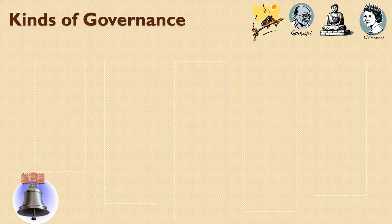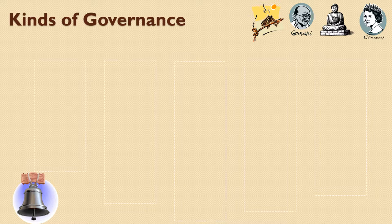To get started, I want to talk about what kinds of governments have been historically observed in most societies that we've studied. We're going to look at each of these types of governance and then ask specific questions and see how they answer these questions.